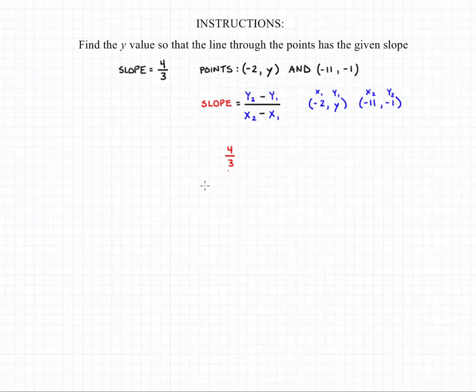back into the equation for slope. So it's going to give us 4 over 3, which is the slope, equals our y2, which is negative 1, minus our y1, which is y, over our x2, which is negative 11, minus x1, which is negative 2.